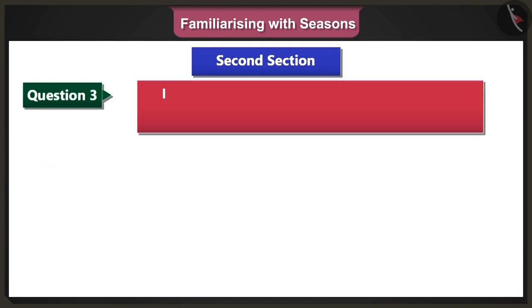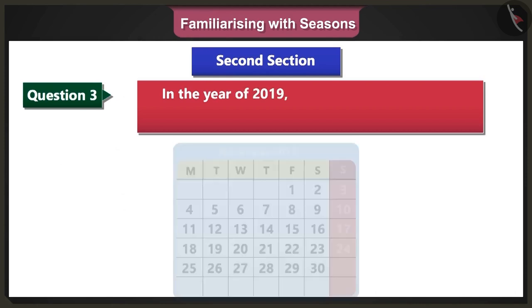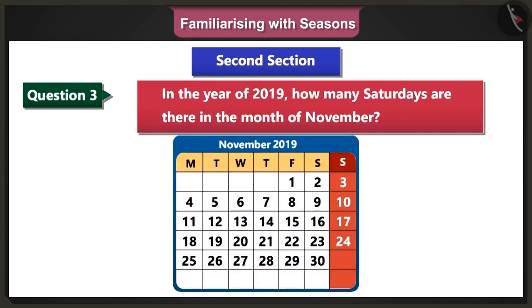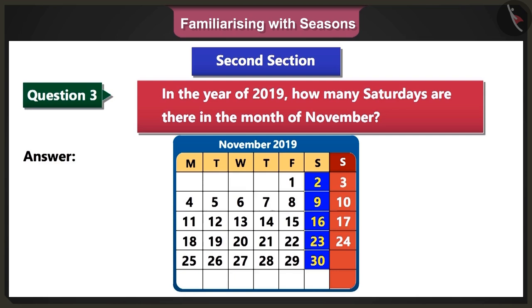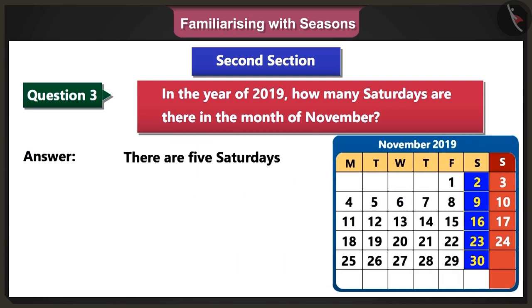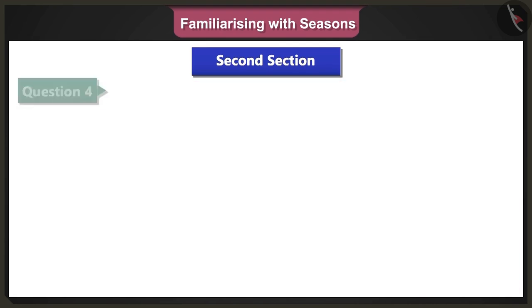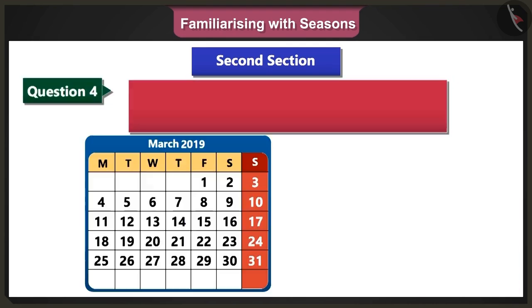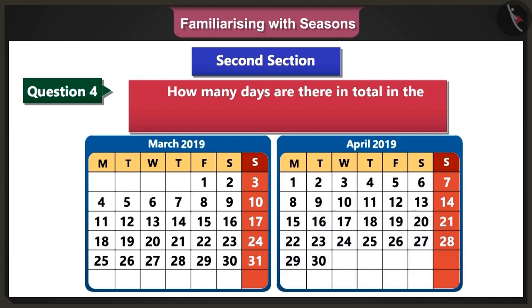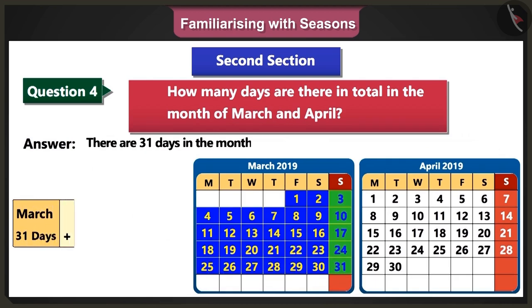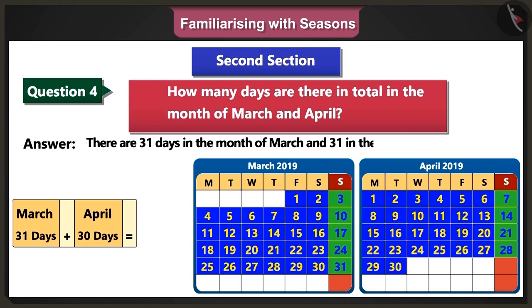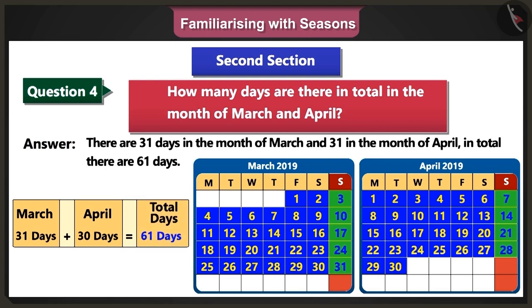Third question: in the year 2019, how many Saturdays are there in the month of November? Answer: in November 2019, Saturdays come on the 2nd, 9th, 16th, 23rd and the 30th, therefore there are 5 Saturdays in this month. Fourth question: how many days are there in total in the months of March and April? Answer: there are 31 days in March and 30 days in April, giving a total of 61 days.